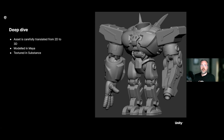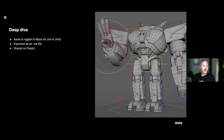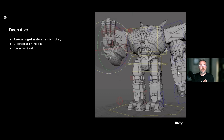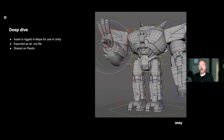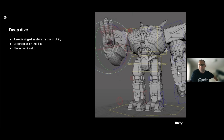Then they rigged it — inserting joints and control objects to manipulate in Maya. This is a bit different from normal because when transferring animation from Maya or Blender into Unity or any game engine, you need to make sure there are no Maya deformers. It's pretty much just joints, geometry, and blend shapes that can come through. Design your rig accordingly. This applies whether you're using Maya, Blender, or any other DCC application.